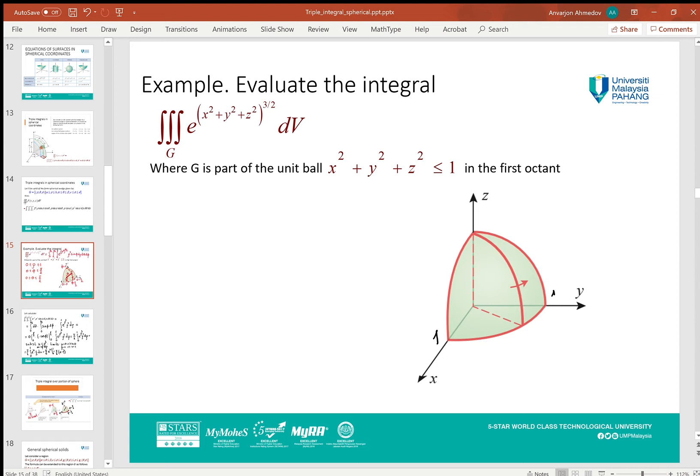What we do is shift to spherical coordinates, and we take into account that x² + y² + z² equals ρ². Now the main idea is how to define the limits for ρ, φ, and θ. As you can see, ρ should be from the origin to the surface, which is the sphere of radius 1, so